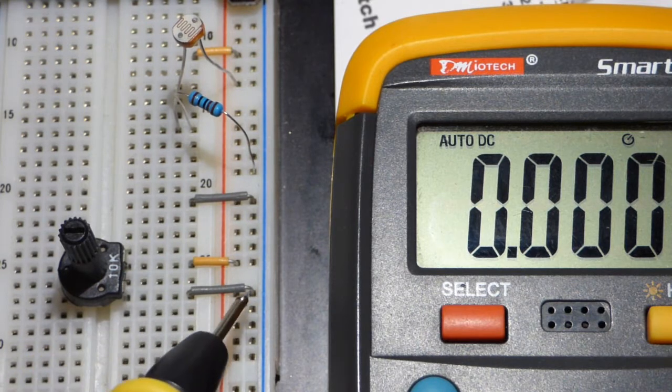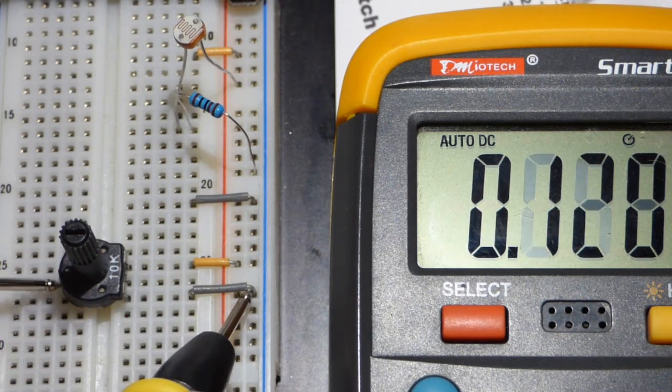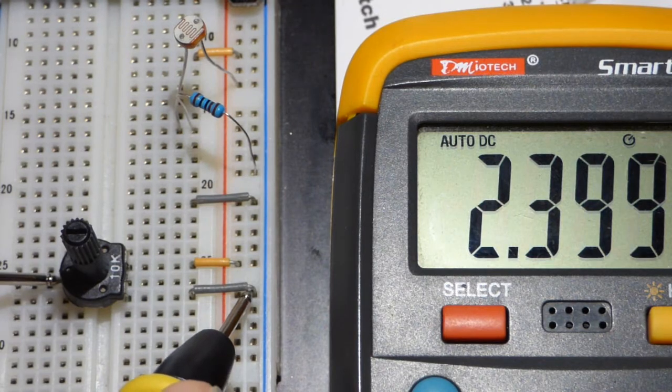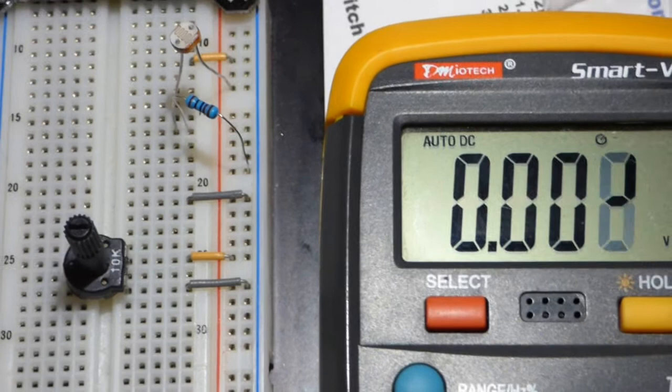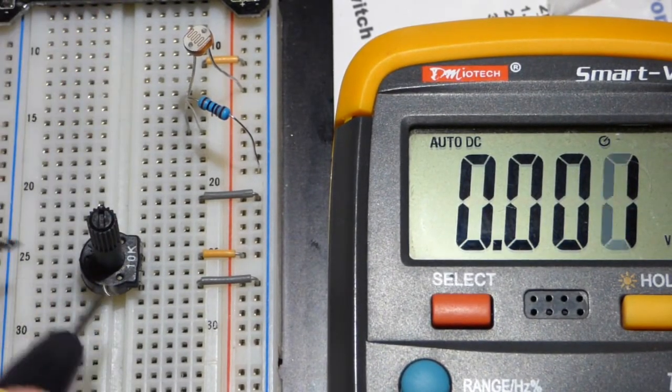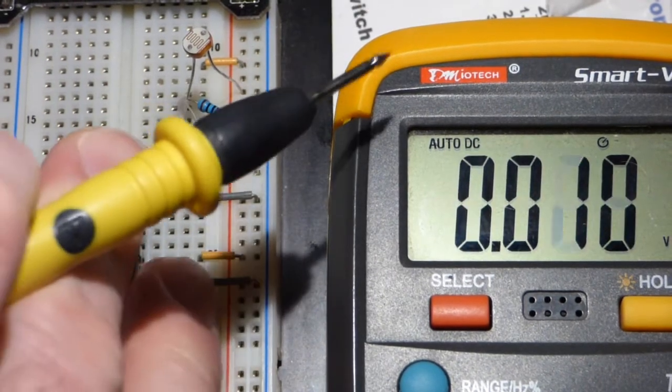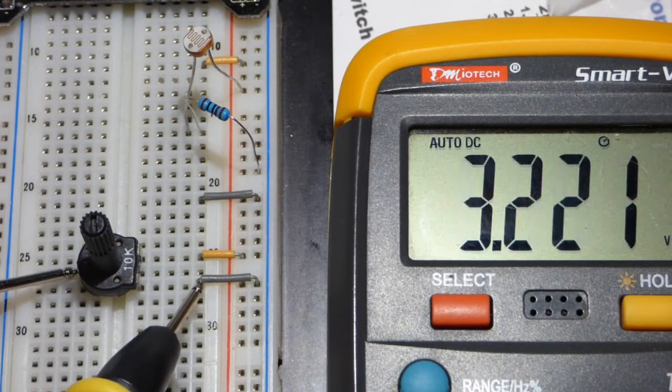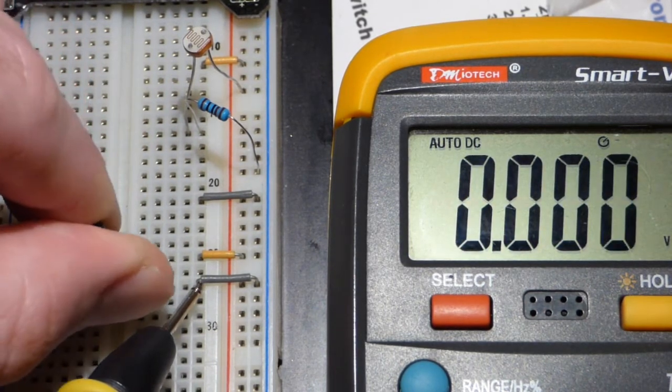So again we're going to measure the voltage in relationship to ground. It's about halfway and we are close to 2.5 volts right there. And we can adjust this manually to any level we want. And so I bet that's about two thirds of the power supply voltage. Okay, more than that even.